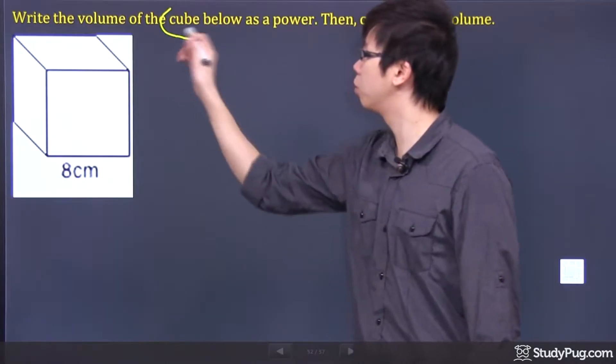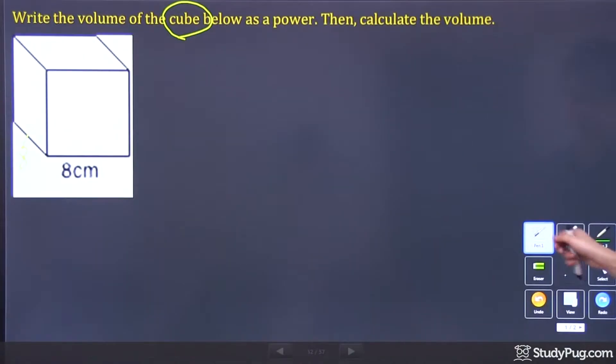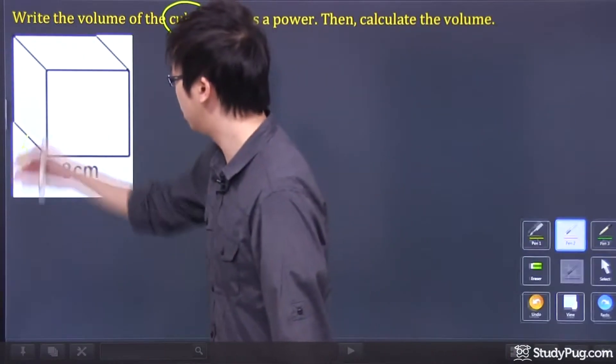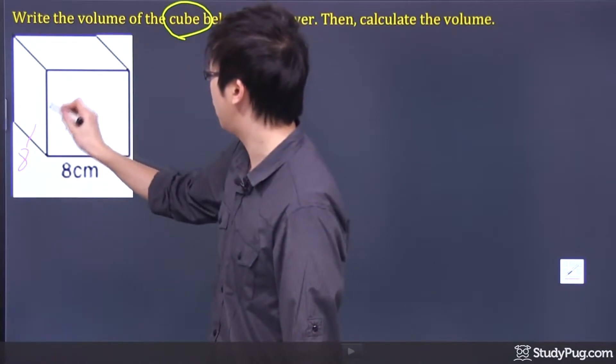So once you see the word cube, right away we know that each side is going to be the same length. So this is 8, and this is also 8, and that means this is 8 as well.